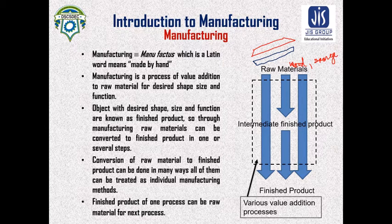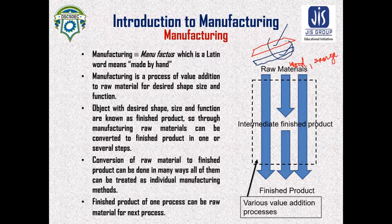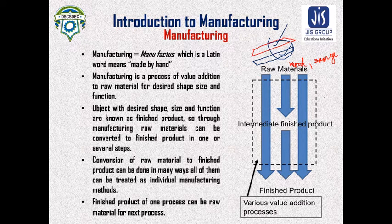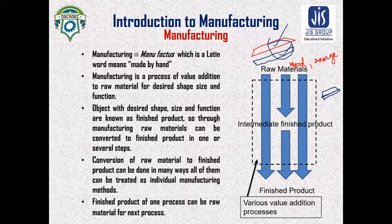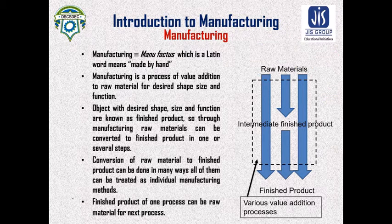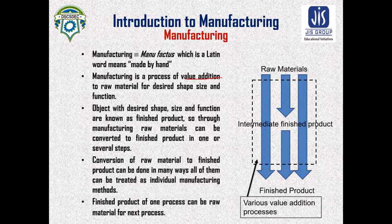To get our finished product, we have to join these two parts. The wooden part and the sponge part are the finished products of one process, but they are the raw material of the second process — the joining process. By joining them together, we will get a complete duster. So from raw material, we add some value, and that value addition process is known as the manufacturing process.